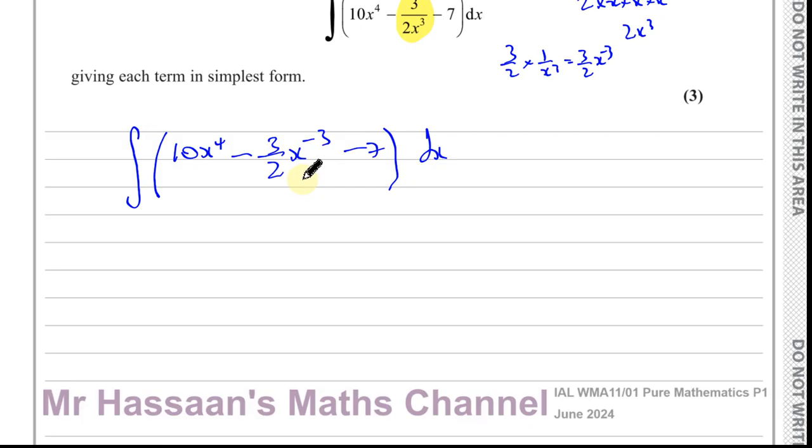We can now actually integrate. When you integrate these type of expressions, you start writing the integral sign and you add 1 to the power. This becomes 10x to the power of 5. I've added 1 to the power, and then whatever the new power is, you divide by that new power. Add to the power and divide by the new power. It's like the opposite or the inverse of differentiation.